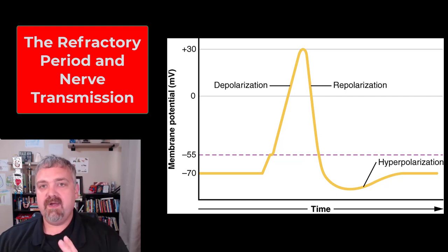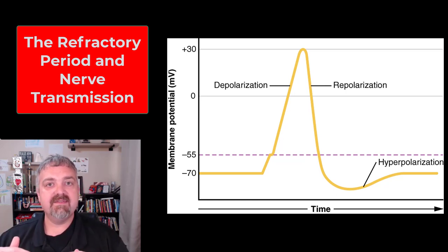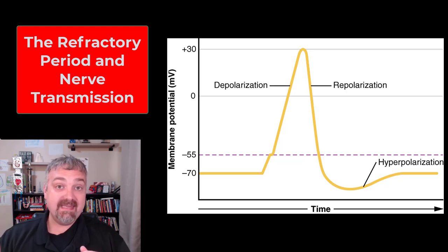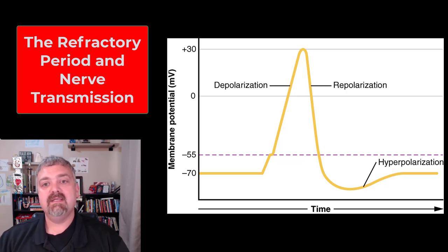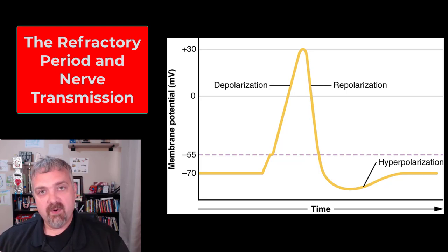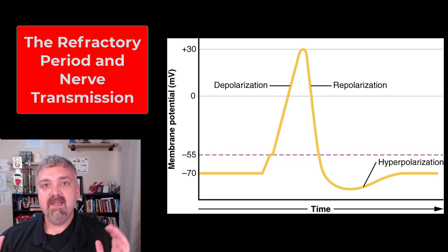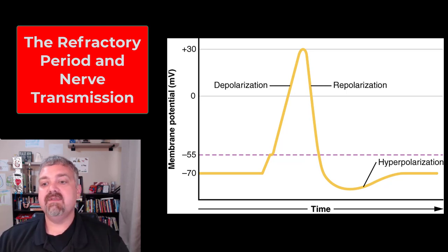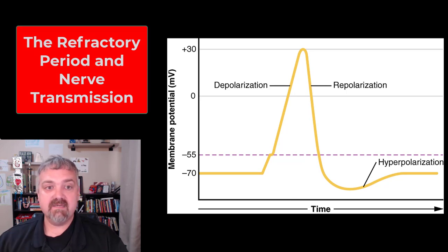Here you see the entire process of an action potential. You start with the resting potential of negative 70 millivolts, you rapidly depolarize the soma of a neuron to positive 30 millivolts as you turn it on, then you repolarize it from positive 30 back to negative 70, but some extra potassium does rush out of the cell, leading to hyperpolarization, and that's where we're at.